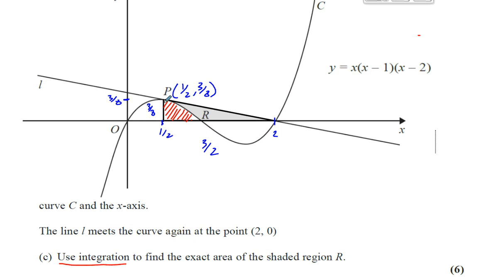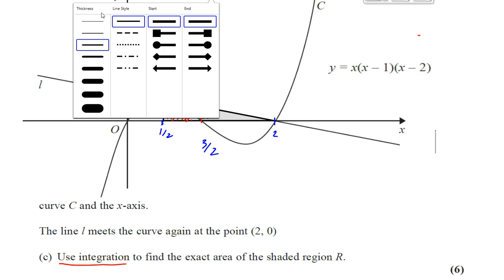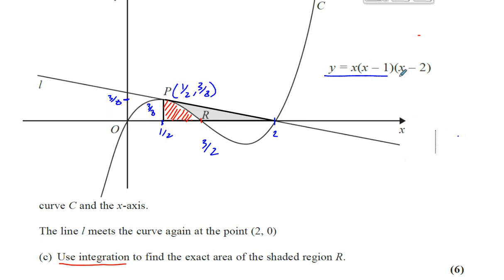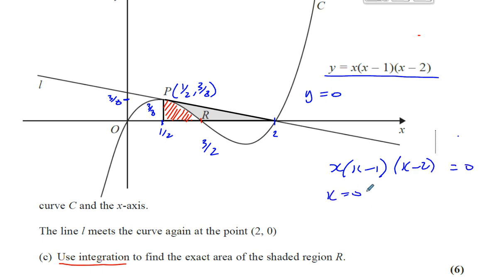We could also use integration to find the area under the line, but there's no need because it makes a triangle shape and you know a formula for that. The area of the triangle is a half times 3 over 2 times 3 over 8. Now we need to find where the curve touches the x-axis. The curve touches the x-axis when y equals 0, which gives x times (x minus 1) times (x minus 2) equals 0. So either x equals 0, or x equals 1, which is the point we need, or x equals 2, which we already know.